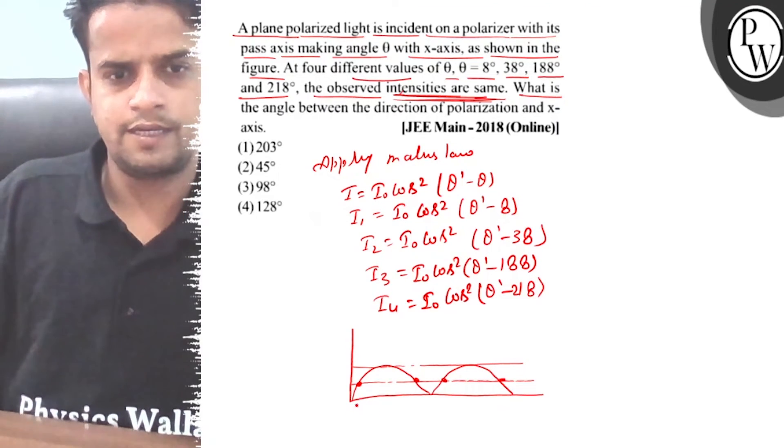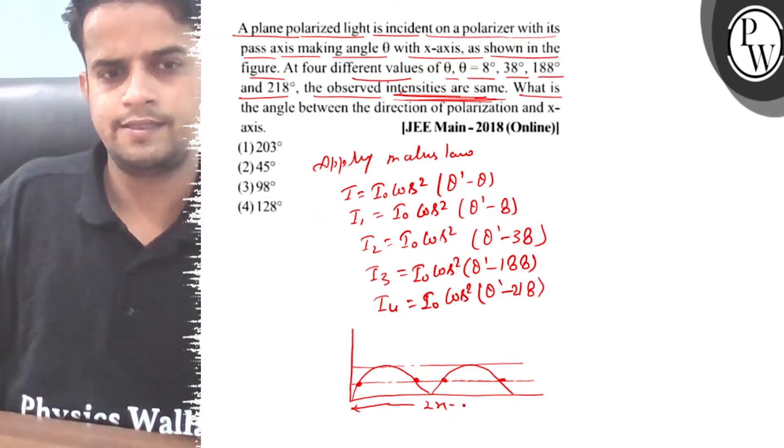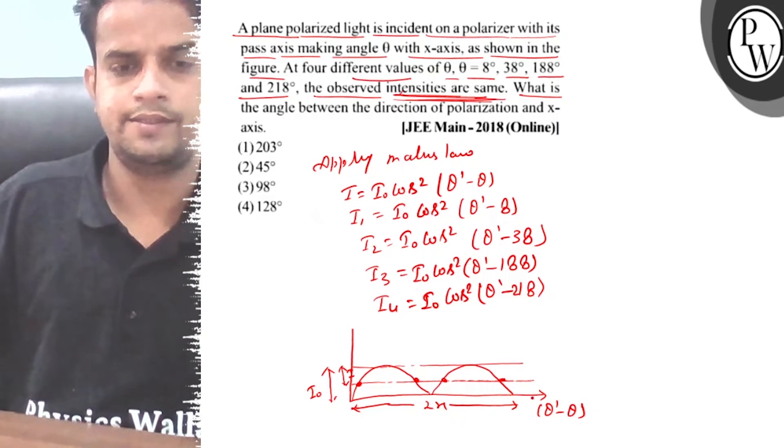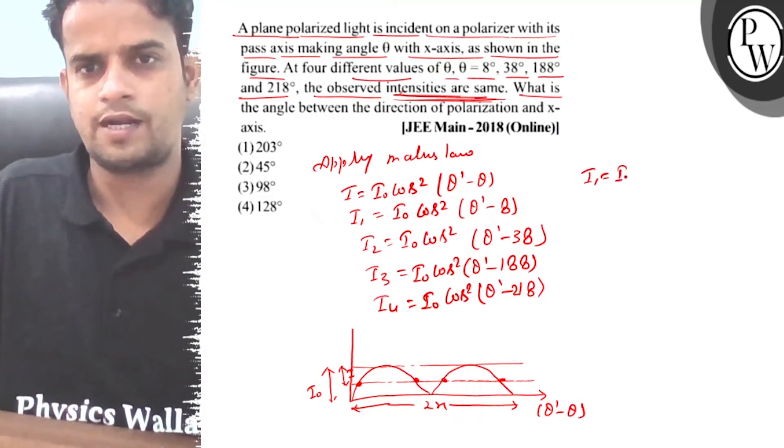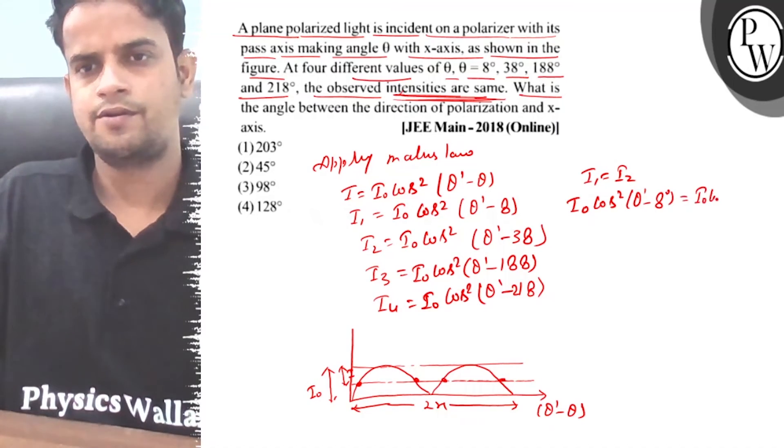Since the intensities are equal, I1 equals I2 equals I3 equals I4. From this, we can determine theta dash. Theta dash minus 8 equals theta dash minus theta, which gives us the angle between the direction of polarization and the x-axis.